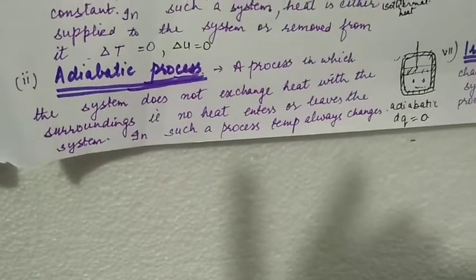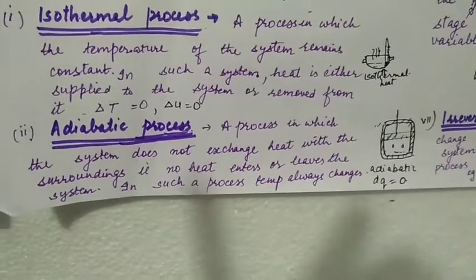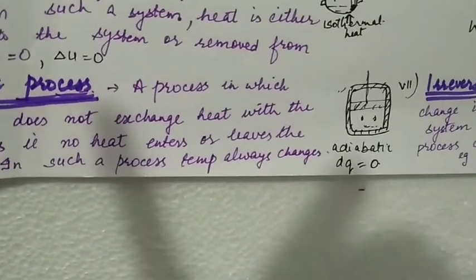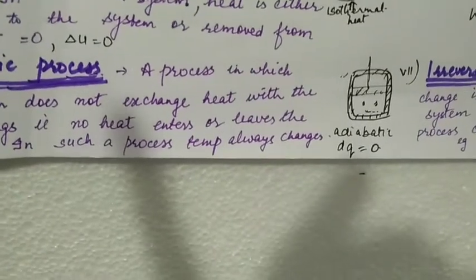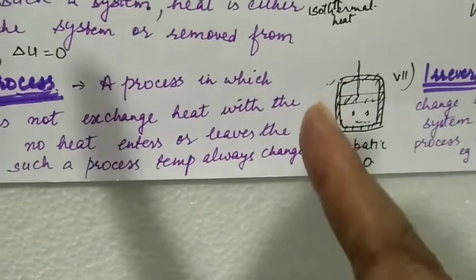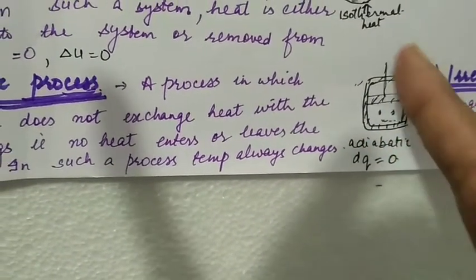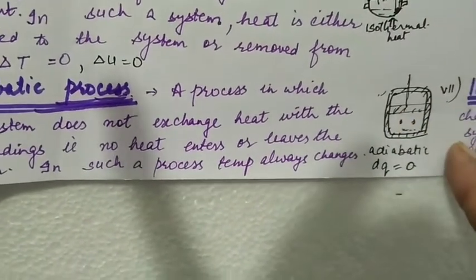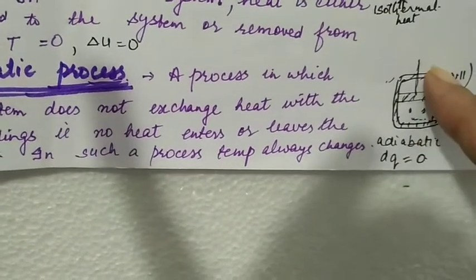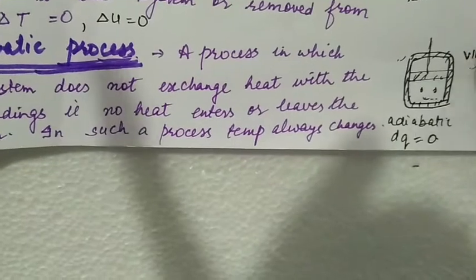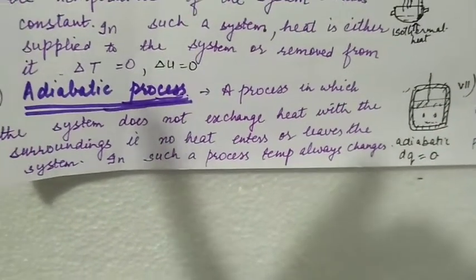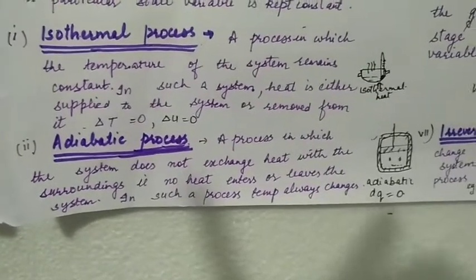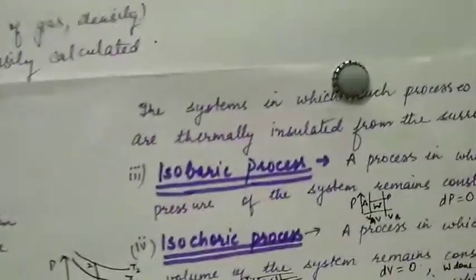Adiabatic process: a process in which the system does not exchange heat with the surroundings - no heat enters or leaves. In such a process, temperature changes. So dq, that is amount of heat, is zero because it is neither taking nor giving heat. And this type of process is carried out in isolated system. In this case, heat will neither come in nor go out. So if you supposing increase the pressure, temperature will increase, but heat will not go out. So this type of process which happens in isolated system where it does not exchange heat with surrounding is called adiabatic process.